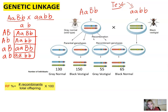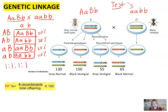What we get is equal proportions of each genotype and phenotype — 25% of each. This is basically a 1:1:1:1 ratio. But when we actually cross these flies, we do not get a ratio of 1:1:1:1, because the number of individuals resulting from the cross is very different.